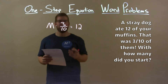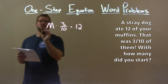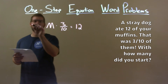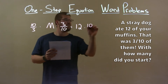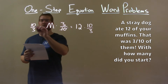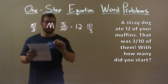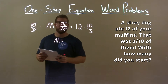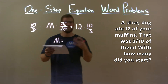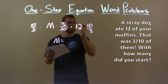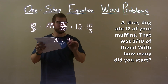To eliminate the three tenths, I can multiply both sides by the reciprocal, which is 10 thirds. In doing so, the three tenths cancels on the left, giving me M by itself — the total number of muffins we started with. 12 times 10 thirds comes out to be 40.